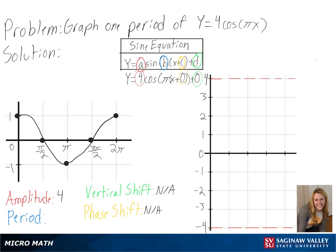Then we can solve for our period, or 2 pi over b. We can see here our b is pi, so we will get 2 as our period.